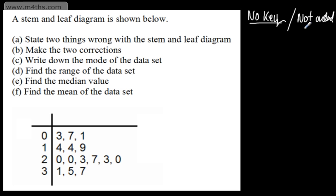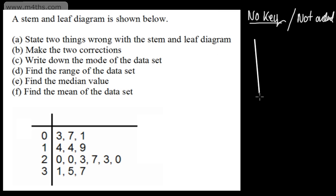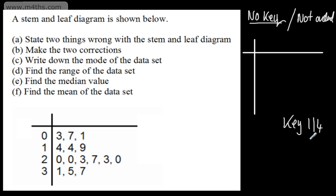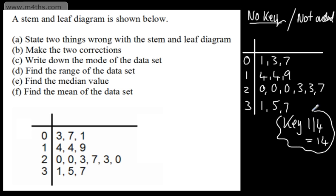For part B we make two corrections. I'll choose the key 1/4 equal to 14. Retaining stems 0, 1, 2, and 3, I order the leaves: row 0 gets 1, 3, 7; row 1 gets 4, 4, 9; row 2 gets 0, 0, 0, 3, 3, 7; row 3 gets 1, 5, 7. That is now an ordered stem and leaf diagram with a key.